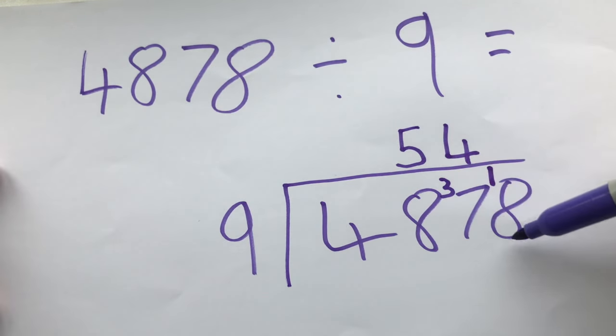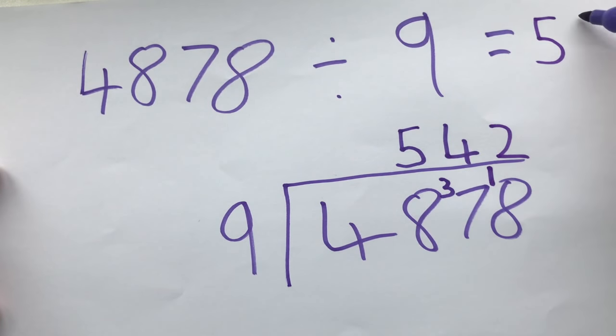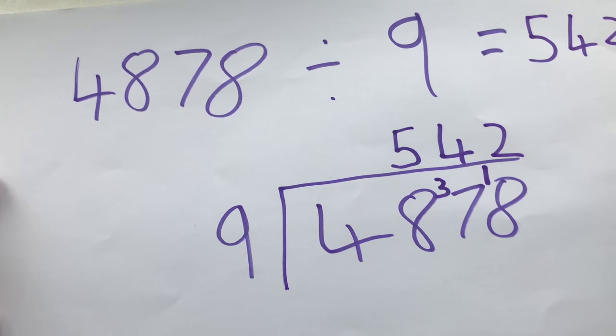How many nines going to 18? That's exactly two. So the answer is 542. Thank you.